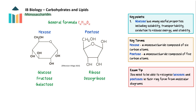Monosaccharides are the most basic unit of carbohydrates. They have the general formula CnH2nOn. Hexoses, for example glucose, fructose and galactose, contain six carbon atoms. Pentoses, for example ribose and deoxyribose, have five carbon atoms.